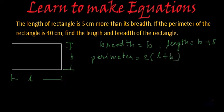So perimeter they have given us as 40 centimeters. This is 40 centimeters. This will be equal to 2 times length, which is B plus 5, and breadth which we have assumed as B itself.